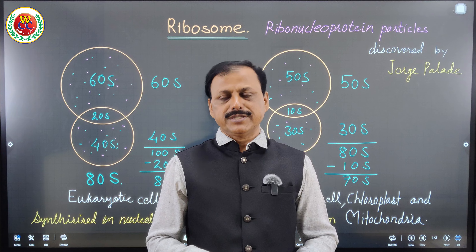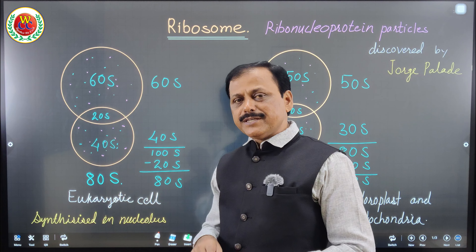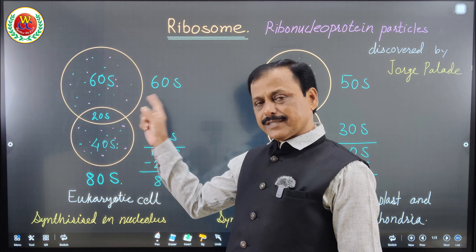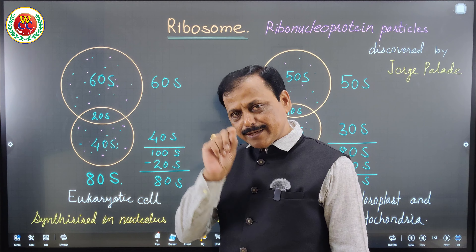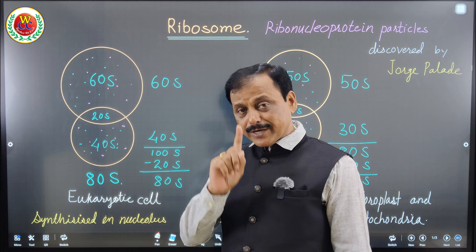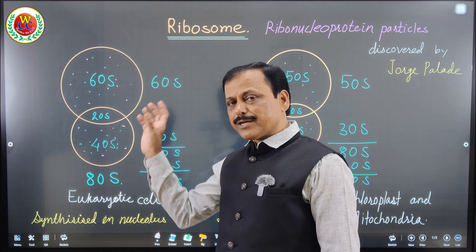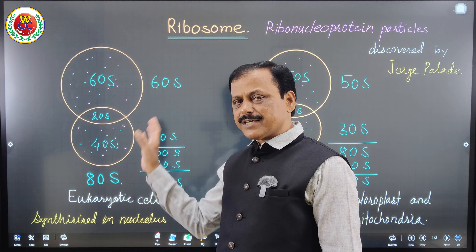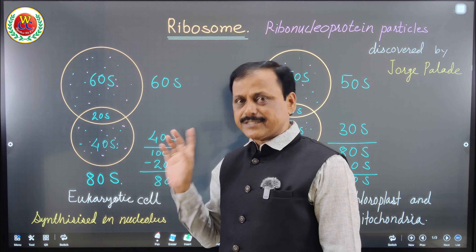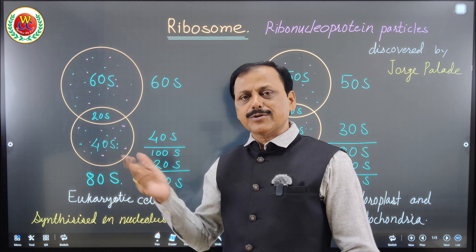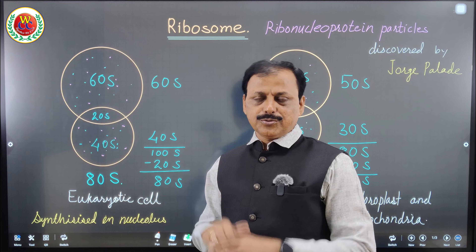Ribosomes are made up of ribosomal RNA and protein. They form a granular structure with a larger and smaller subunit, with sedimentation coefficients of 80S and 70S respectively. That is why they are called 80S type and 70S type.